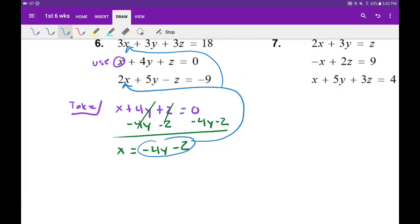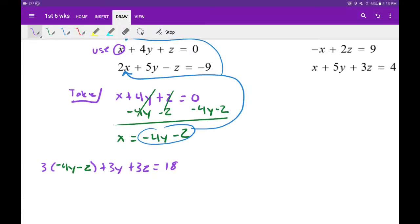Let's take that top equation. So I'm going to have 3 times, put my expression in, negative 4y minus z, plus 3y plus 3z. This is going to step down to a 2 by 2 equation.